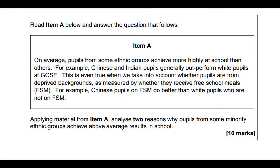Let's look at the first example. Pause the video and read the item and the question. So immediately when you read through this, you should be able to identify the topic — we're dealing with ethnic differences in education. This is actually quite a difficult one because the question asks you to analyse two reasons why pupils from some minority ethnic groups achieve above average results. The item doesn't actually give you the reasons why Chinese and Indian students perform better; it just tells you that they do.